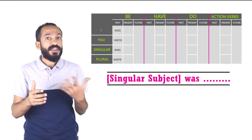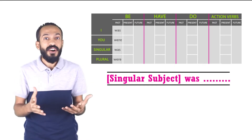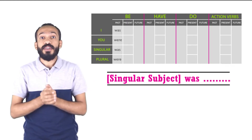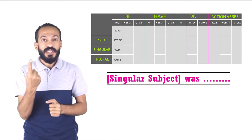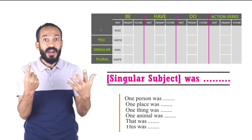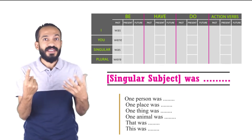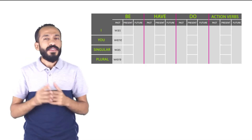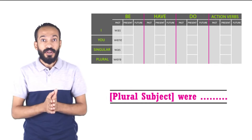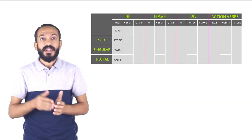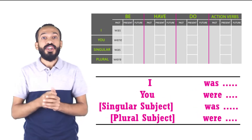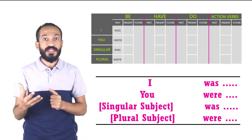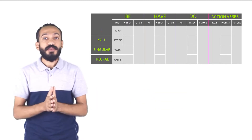it, the boy, the girl, the dog, the building, the car — whatever it is, as long as it is singular, we should be using 'was.' One subject, singular subject: was. One person: was. One place: was. One thing: was. One animal: was. If your subject is plural, we're going to use 'were.' I was, you were, singular subject was, plural subject were — and that's it.